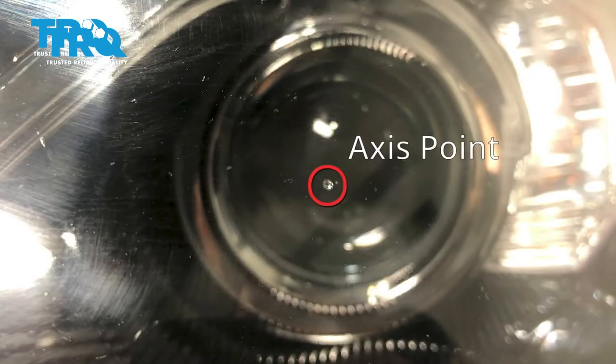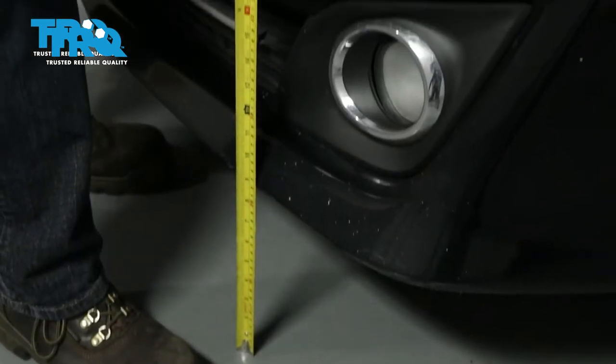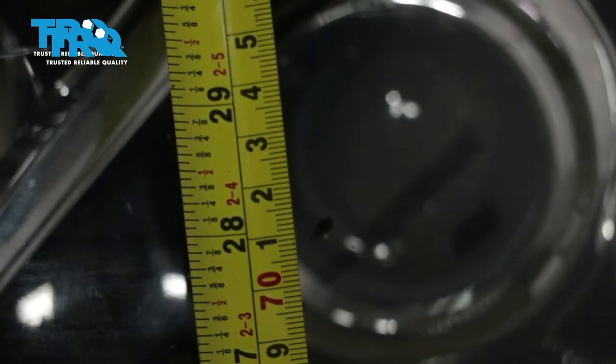What we're going to do is mark that with an erasable marker just so it's easier to see. Next, what we need to do is measure from the level ground up to this point and take note of that measurement.